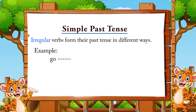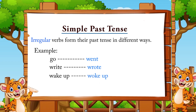Now some irregular verbs: go → went, write → wrote, wake up → woke up, get → got, has or have → had. The past form of has or have is had.